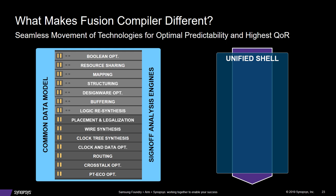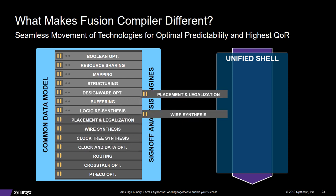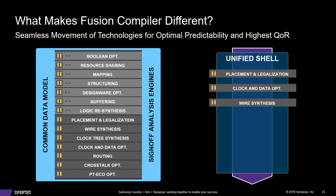What makes Fusion Compiler different? The fusion of Compile Fusion and PlaceOpt — through the unified shell, you're now running both synthesis and place-and-route in the same shell. That gives you the advantage of bringing place-and-route features into synthesis. Placement and legalization are now available in synthesis. CCD — clock and data optimization — are brought forward to the beginning of the flow. And wire synthesis allows you to see the effects of the 5LPE layer stack at the very beginning of the flow.